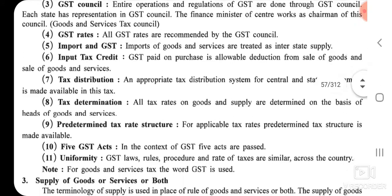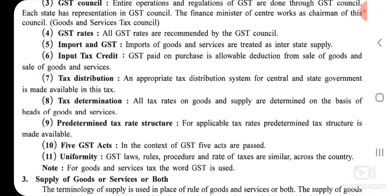Fifth: Import and GST — imports of goods and services are treated as interstate supply. Sixth: Input Tax Credit — GST paid on purchase is allowable as deduction from GST on sale of goods and services. Seventh: Tax Distribution — an appropriate tax distribution system for central and state governments is made available. Eighth: Tax Determination — all tax rates on goods and supply are determined on the basis of heads of goods and services.